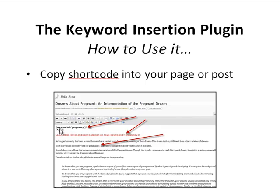The shortcode format looks like this: a bracket, then 'keyword ID equals' the name you gave it, then close bracket. In this sample, there are three instances of it — one in a headline, one within an affiliate link, and one within paragraph text. Anywhere that shortcode appears when the post is published, the visitor will either see your default keyword text, or they will see the actual keyword they typed into Google, Yahoo, or Bing — found your website through this dynamic keyword insertion.